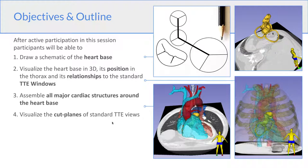So we'll first go through a three-step process for drawing a schematic of the heart base, then we'll look at the morphology of it in 3D and its position in the chest and its relationships to standard TE windows. We'll assemble all the cardiac structures around it and we'll visualize the standard cut planes for echo.